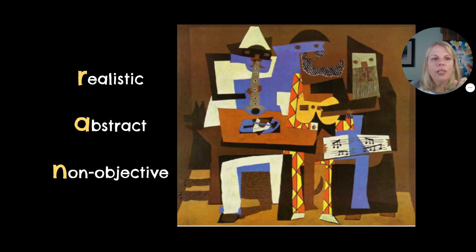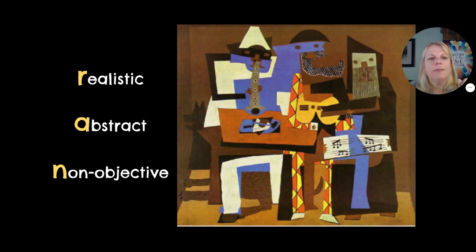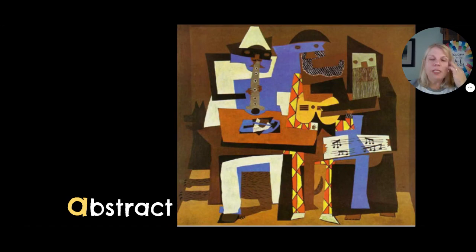Realistic, abstract, non-objective — which one is it? Abstract. Yeah, abstract. This is called The Three Musicians — you can see why. They're playing instruments, they've got music, but obviously not realistic.